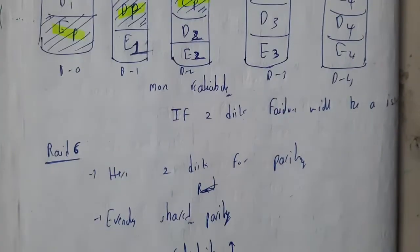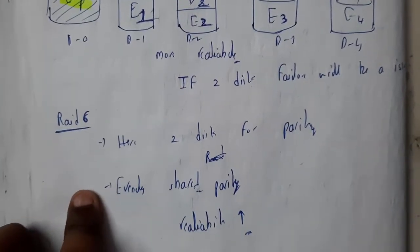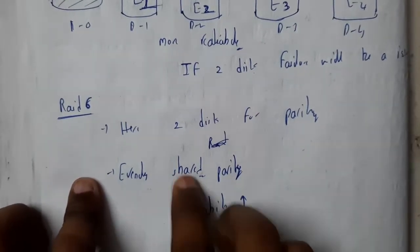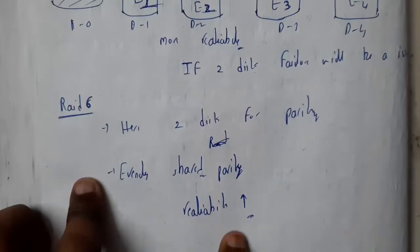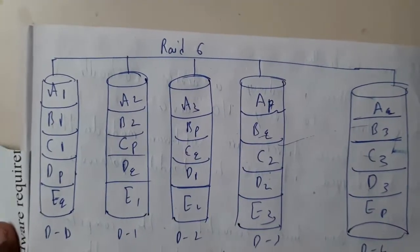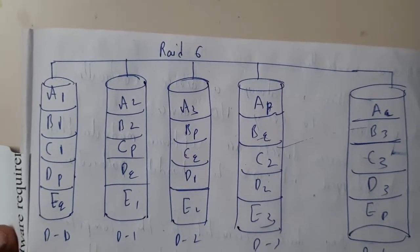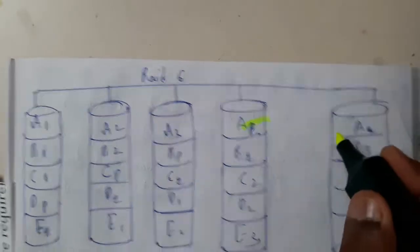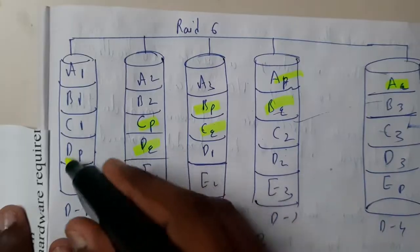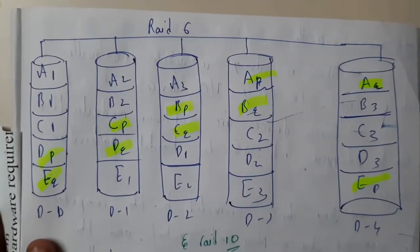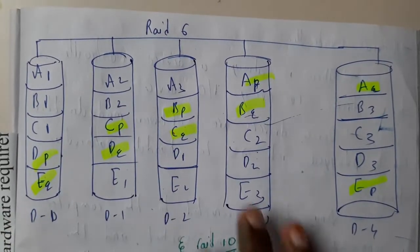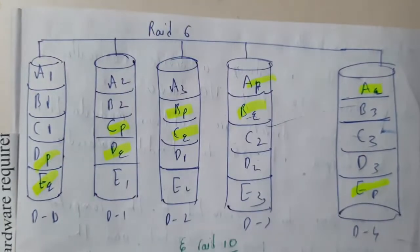Moving on to RAID 6, here we use two disks for parity. The parity is again evenly shared and this also increases reliability so errors can be rectified more easily and faster. We have two parity values — p and q — distributed as ap, aq, bp, bq, cp, dp, dq, ep, eq. RAID 6 can tolerate up to two simultaneous disk failures.